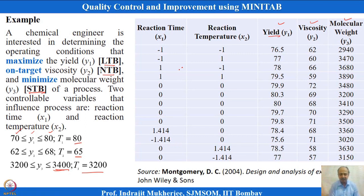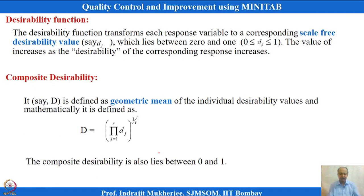This is a CCD design — the experimentation was done with factorial points, center points, and axial points. This is the experimental setup we are using, and we are using a composite desirability to reach the optimal solution. MINITAB's response optimizer will use heuristics to solve the multiple response problem and give the final solution for settings of x1 and x2.